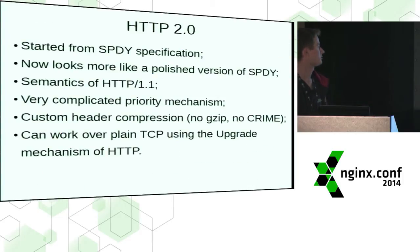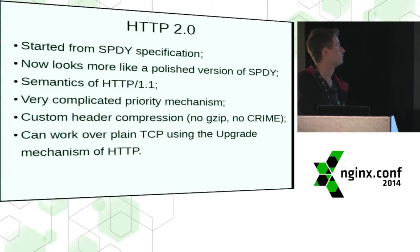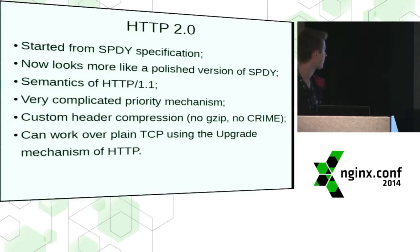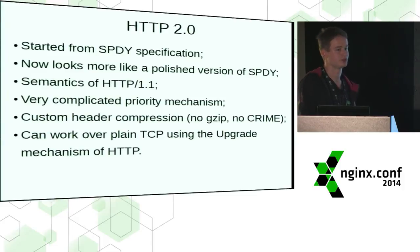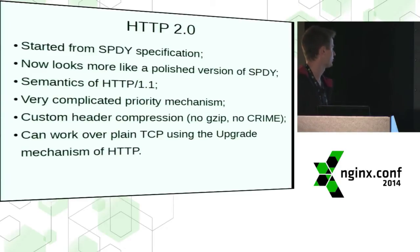My last part of the talk is about HTTP 2.0, because this is our future and it's almost the same as SPDY. It started from the SPDY specification, but it looks more like a polished SPDY version. It has a more complicated priority mechanism and it's also more painful to implement. It uses the semantics of HTTP 1 version, so you don't need to change anything in your backends. We can implement HTTP 2 in Nginx just like a new version of SPDY. It also uses custom header compression, so it doesn't suffer from the CRIME attack.